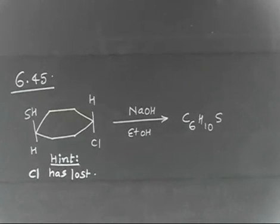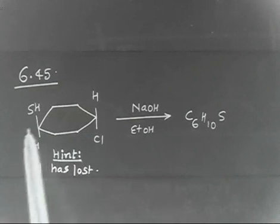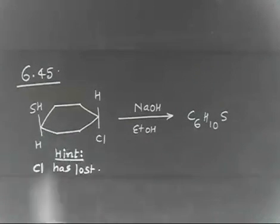Okay, let us discuss this problem. We have been given a molecule. This contains SH and there is a Cl. Basically, they are anti to each other.